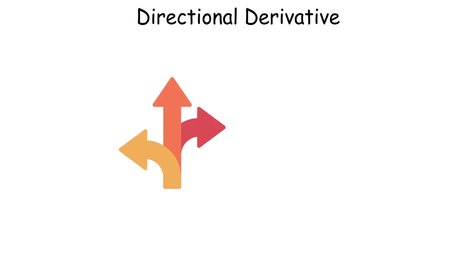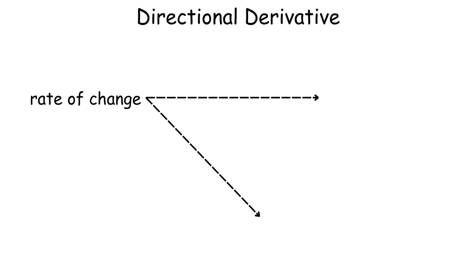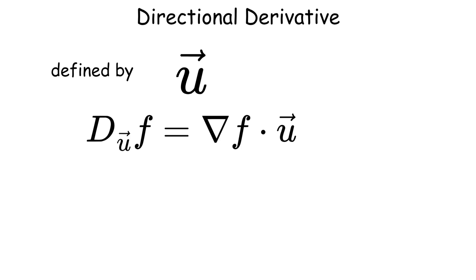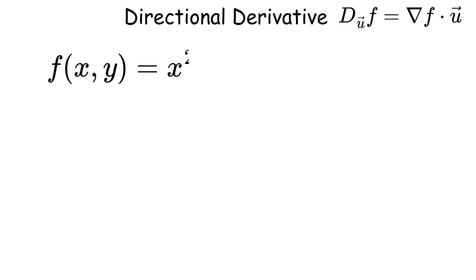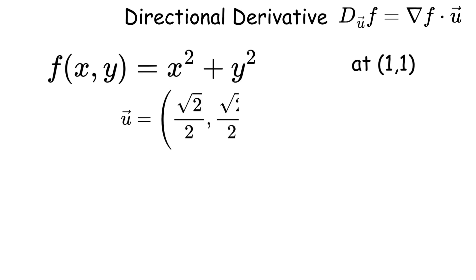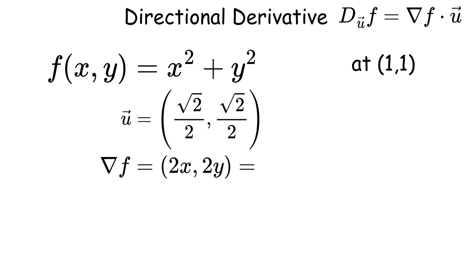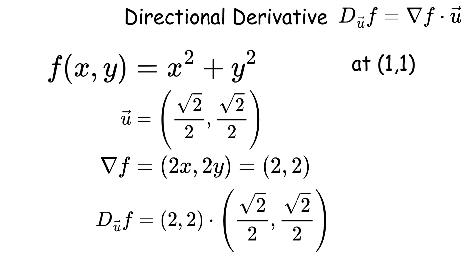The directional derivative measures the rate of change of a function in a specific direction, defined by a unit vector u. It is given by D sub u f equals the gradient of f dot u, where the gradient of f is the vector of partial derivatives. For example, for f of x and y equals x squared plus y squared at the point (1, 1), with u equals (square root of 2 over 2, square root of 2 over 2), the gradient is (2x, 2y), which equals (2, 2), so D sub u f equals 2 times square root of 2. This is key in optimization and physics.